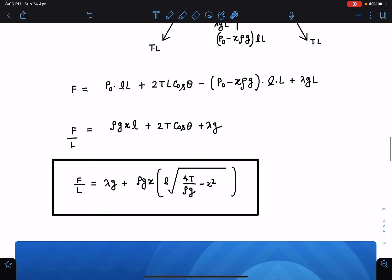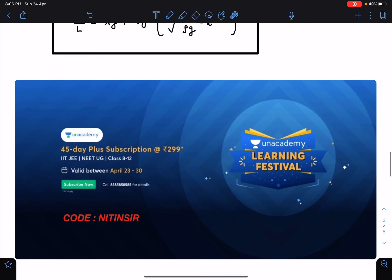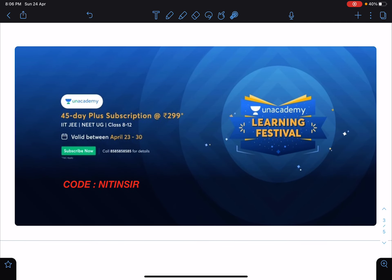Guys, as most of you are aware of Unacademy 45 day plus subscription, it is just at 299 rupees and things cannot be cheaper than this, but it is valid only up till April 30th. So very few days are there and you can access entire Unacademy platform for all three subjects. You can access all my courses as well and you'll find those courses as most amazing courses in physics. You can use my code NITINSIR in order to connect with me.